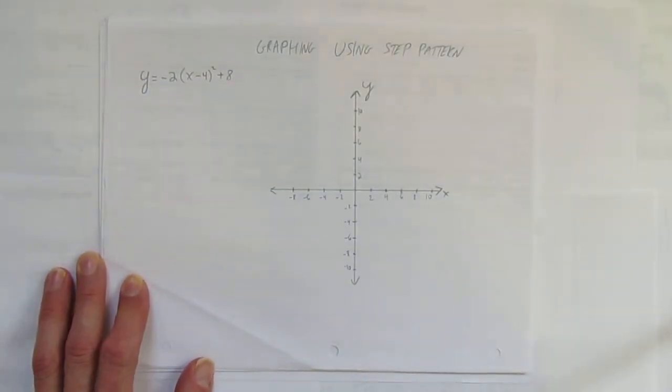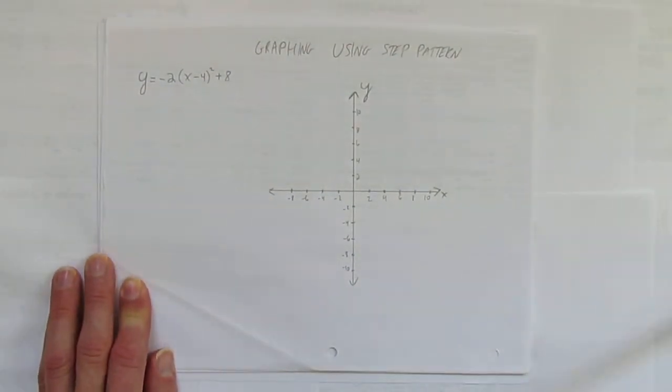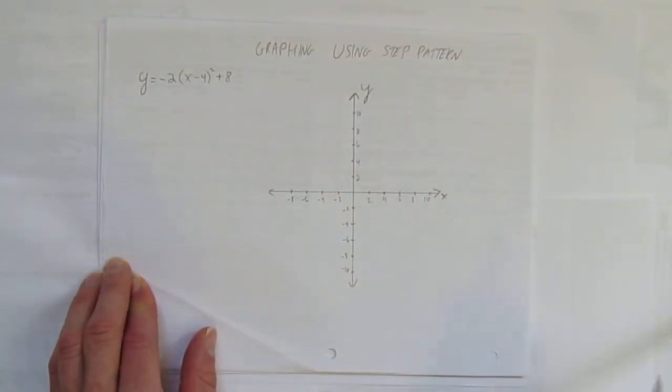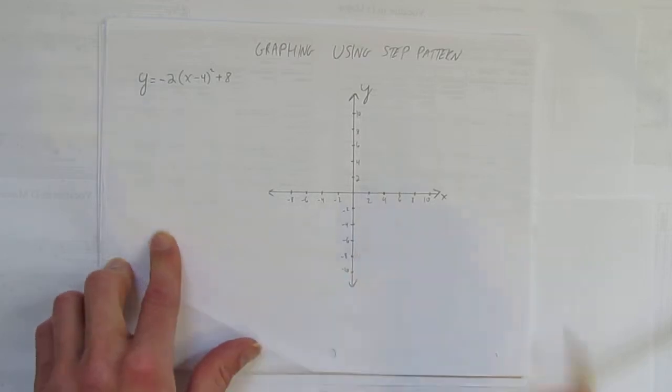In this video, we'll look at graphing using step pattern. So the equation that's given is y equals negative 2(x minus 4) squared plus 8. Clearly a quadratic.